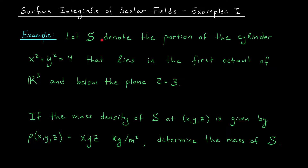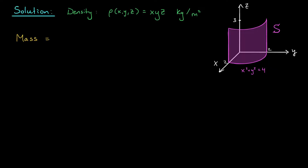First, I'd like to consider the surface S given by the portion of the cylinder x squared plus y squared equals 4, that lies in the first octant of R3 and below the plane z equals 3. We are given the mass density of this surface at a point x, y, z as x, y, z kilograms per meter squared. We'd like to determine the total mass of that surface. Just like when dealing with double or triple integrals, it's often helpful to draw a picture to see what's going on. Here is our surface S — it's the portion of this cylinder that lies in the first octant of R3, but below the plane z equals 3.